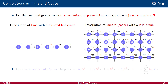That we can describe time and space using graphs is an almost trivial observation, but one that nonetheless has interesting conclusions. The one that is germane to our current discussion is that we can use line and grid graphs to write convolutions as polynomials on their respective adjacency matrices.